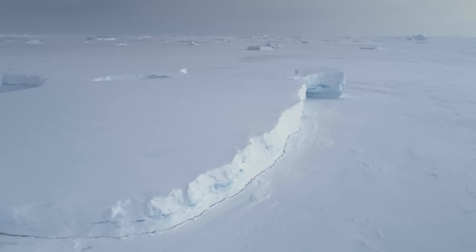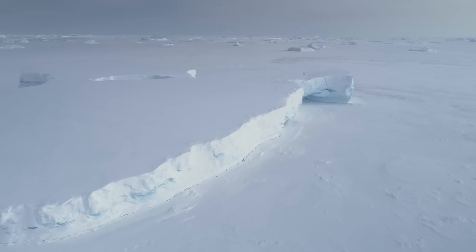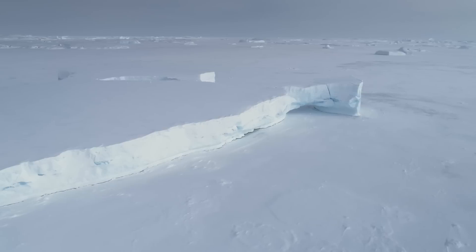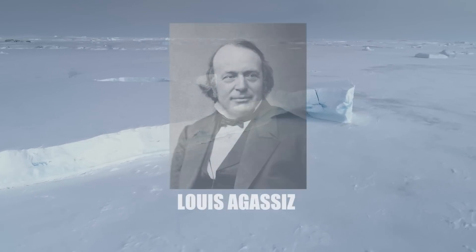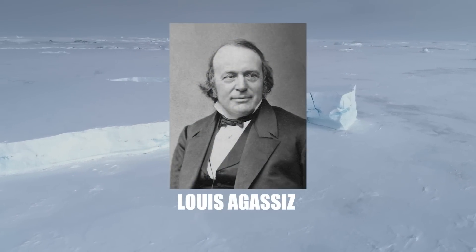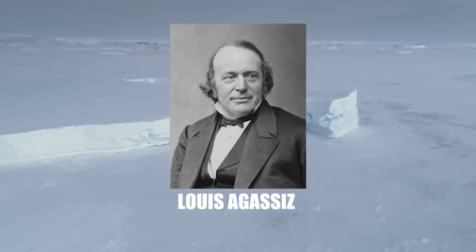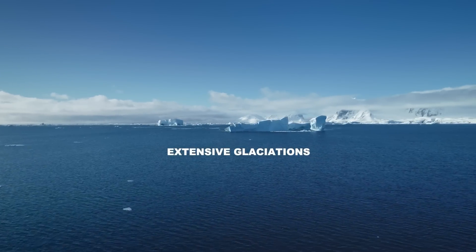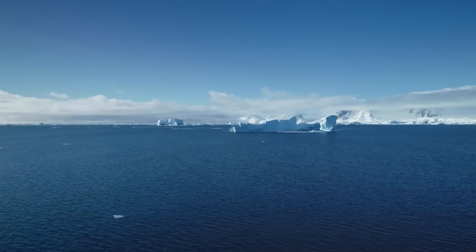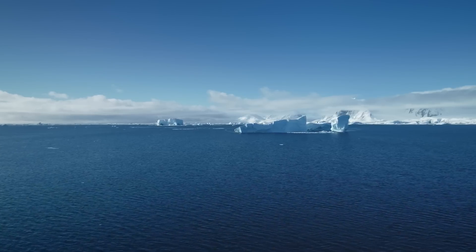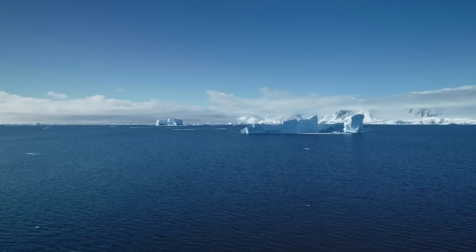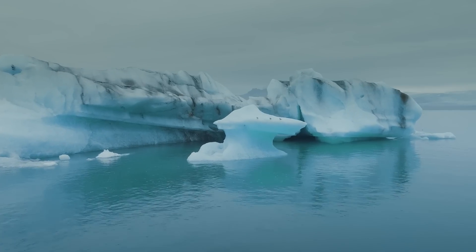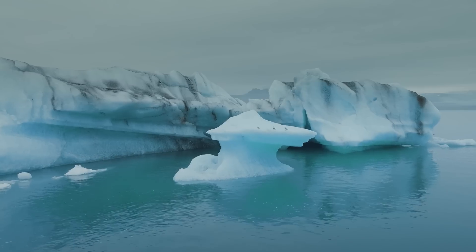The discovery of glacial and interglacial cycles was revolutionary for climate and geological science. In the 19th century, geologist Louis Agassiz was the first scientist to identify these patterns. Agassiz proposed the existence of extensive glaciations in Earth's geological history, based on observing geological formations in Europe, such as glacial valleys and moraine deposits. These observations led to the theory of glacial and interglacial cycles.